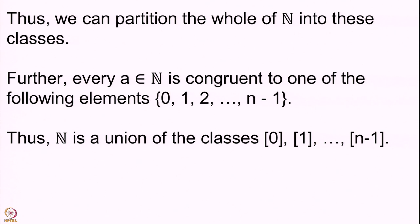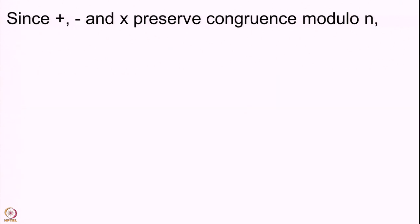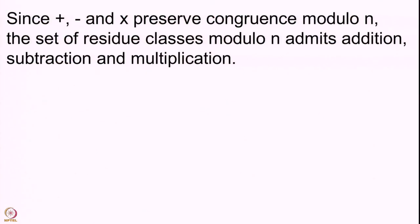So n is a disjoint union of the classes [0], [1], [2], all the way up to [n−1]. These are called the residue classes modulo n. When we talk about arithmetic, addition, subtraction and multiplication preserve congruences modulo n. Therefore, the set of residue classes modulo n admits addition, subtraction and multiplication. So this finite set — class [0], class [1], class [2], up to class [n−1] — admits all these operations.